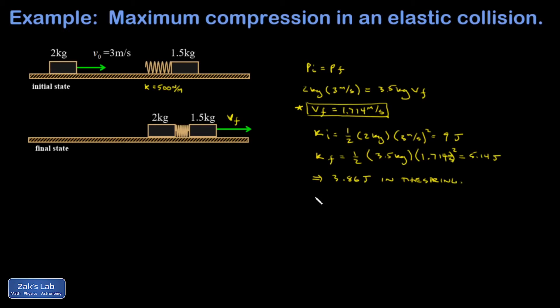Now I go to my spring energy formula. Potential energy in a spring is one half kx squared. I know the potential energy in there is 3.86 joules. I've got a spring constant of 500 newtons per meter. All that's left is that compression that I'm after. And I do a little bit of work in my calculator and I get 0.124 meters or 12.4 centimeters of compression.